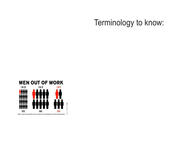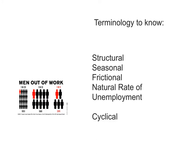Before we start off, there are some terms you should definitely know, and you've already read about this. We'll animate the diagrams, but these terms should be familiar to you already. You should know structural, seasonal, and frictional unemployment, and that the three of those together make up the natural rate of unemployment. And finally, you should know cyclical unemployment, which is not included in the natural rate of unemployment.